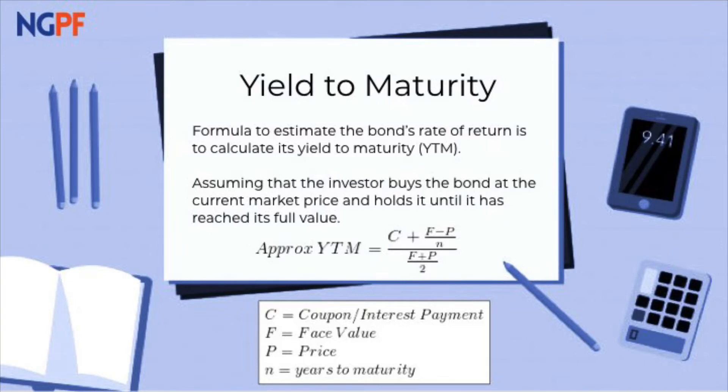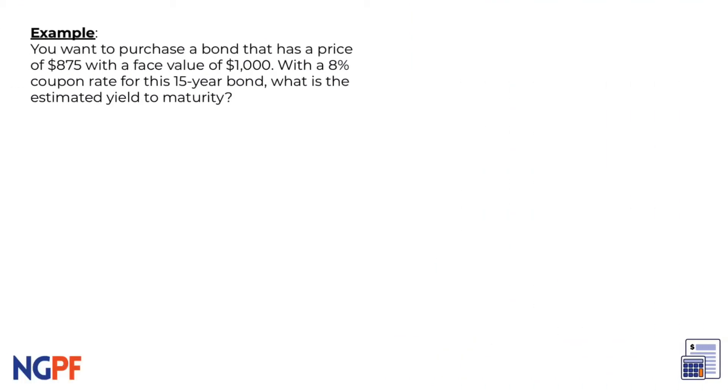Let's try this example. You want to purchase a bond that has a price of $875 with a face value of $1,000. With an 8% coupon rate for this 15-year bond, what is the estimated yield to maturity?